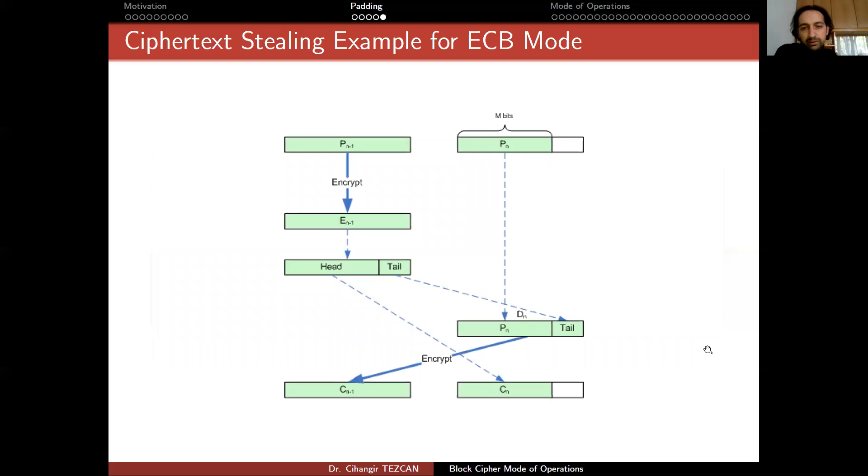So idea is as follows. This picture for the idea of ECB mode. So this is the last two plaintext blocks you have to, you want to encrypt. And there's some empty bits here. So instead of performing a padding here, ciphertext stealing method works like this.